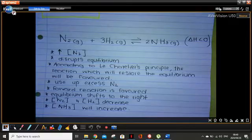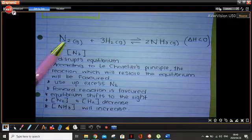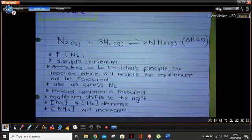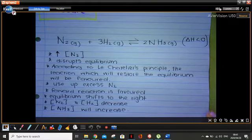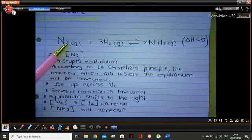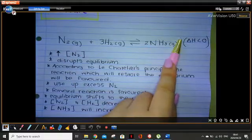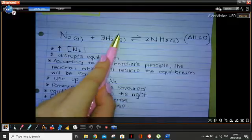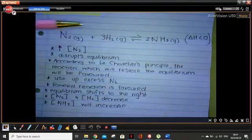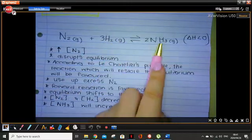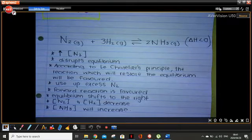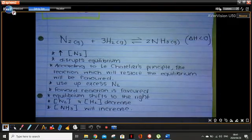Brief recap: the system was in a happy state of dynamic chemical equilibrium — forward and reverse reactions were equal. Then we added more nitrogen gas, which disrupted the equilibrium. According to Le Chatelier, we need to favor the reaction that restores equilibrium — use up the extra nitrogen — which is the forward reaction. So equilibrium shifts to the right, the concentration of nitrogen and hydrogen decreases, and the concentration of ammonia increases.